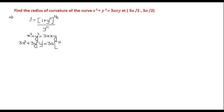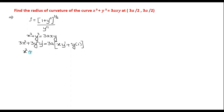3a is a constant. The derivative of xy by the product rule: keep x as it is, the derivative of y is y', plus y as it is, the derivative of x is 1. Now take 3 common and cancel the 3 on the right hand side.